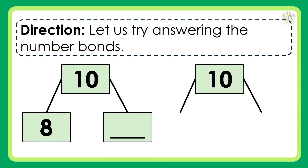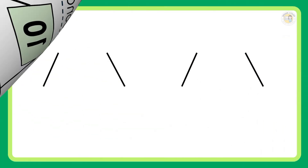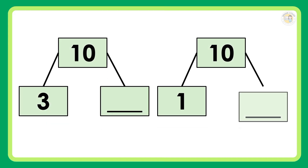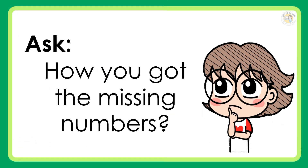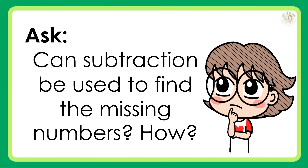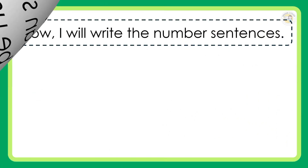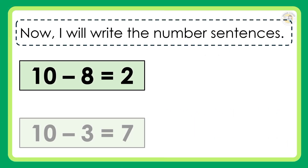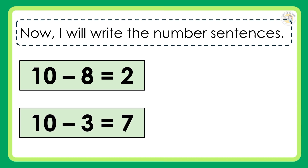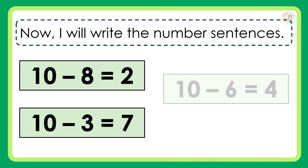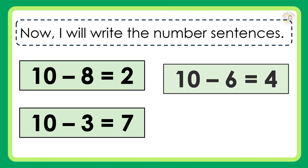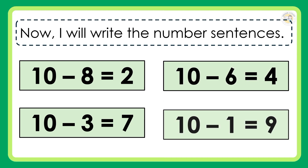Subtracting numbers with minuends up to 10. Let us try answering the number bonds — what is the missing number? How did you get the missing numbers? Can subtraction be used to find the missing numbers? How? Now I will write the number sentences: 10 minus 2 is equal to 8. 10 minus 3 is equal to 7. 10 minus 6 is equal to 4. 10 minus 1 is equal to 9.